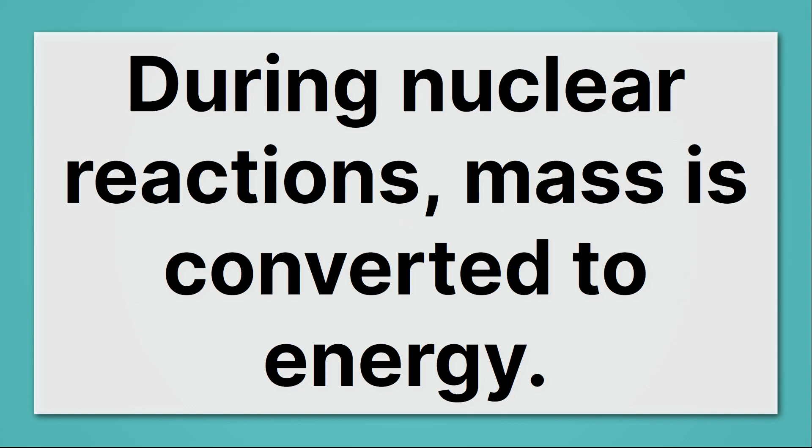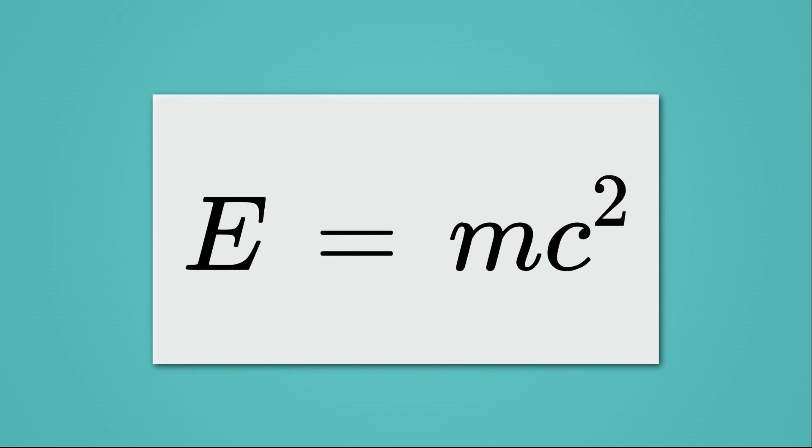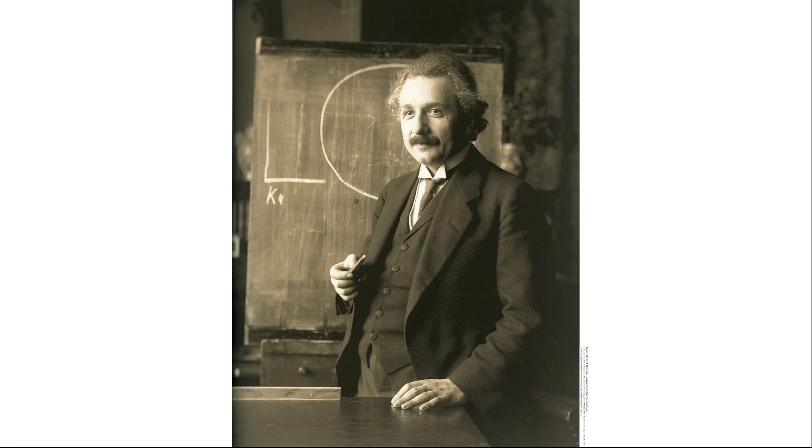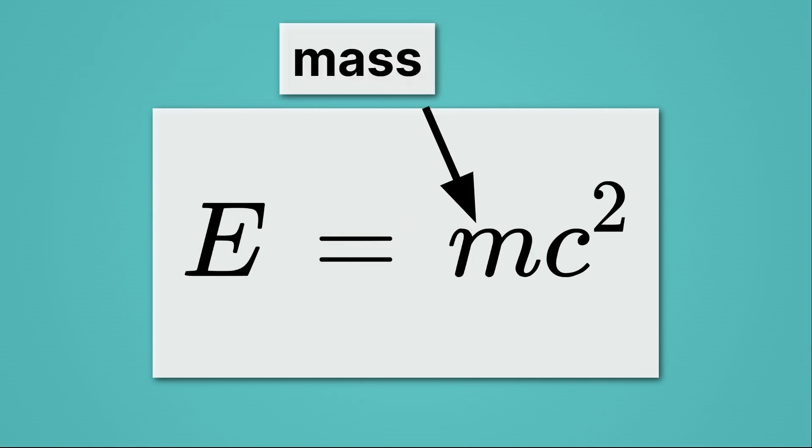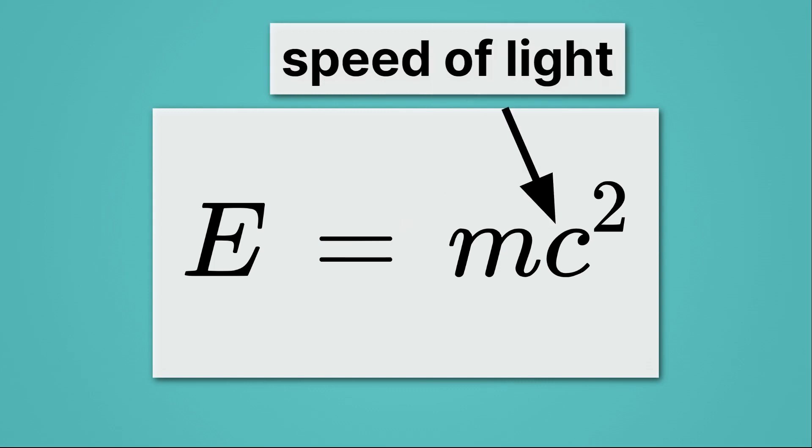It's done so by perhaps the most famous physics equation, E equals MC squared, developed by none other than Einstein. E stands for energy. That's the energy released in a nuclear reaction. M stands for the mass that disappears. So mass decreases during a nuclear reaction, which sounds strange, but the mass decreases and it's converted into energy.